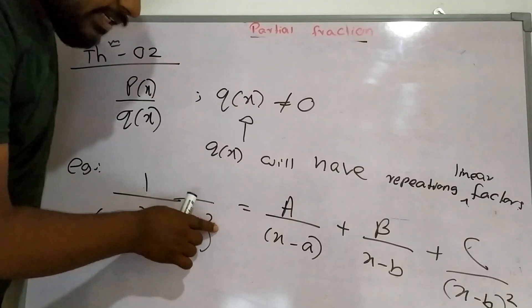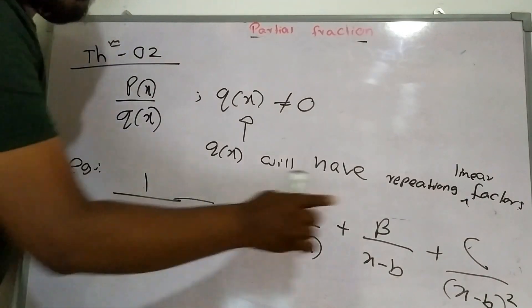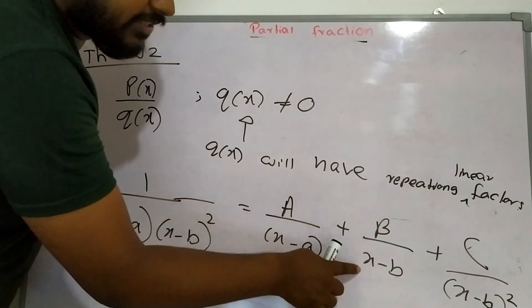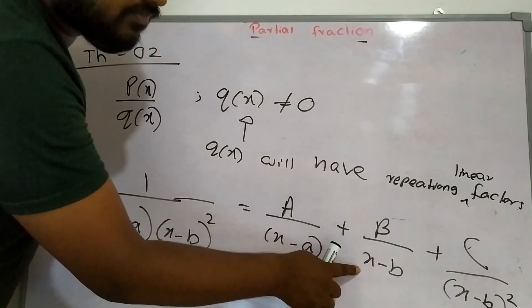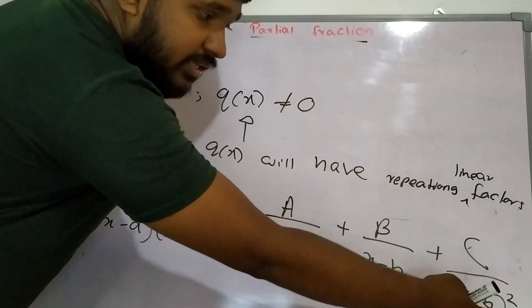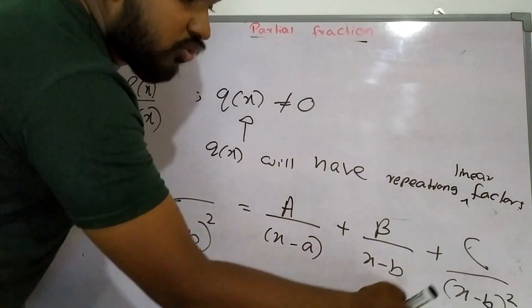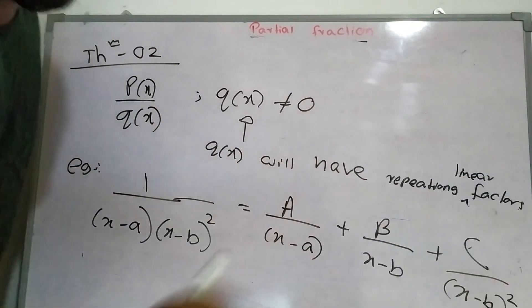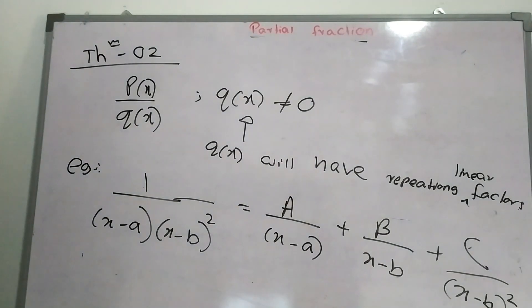If it is third power, you will have to write B over (x minus b), C over (x minus b) squared, and also D over (x minus b) to the power 3.